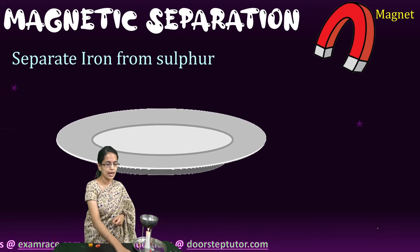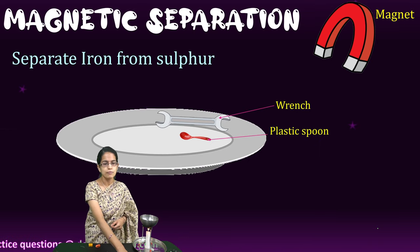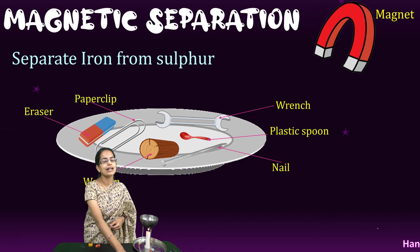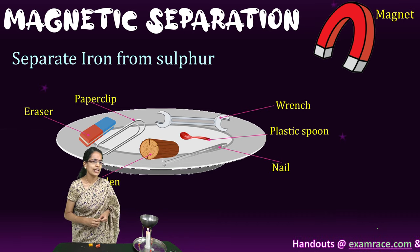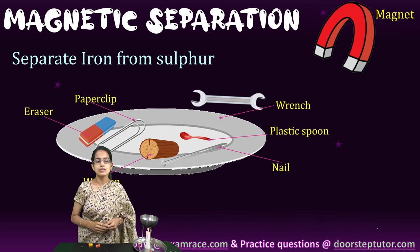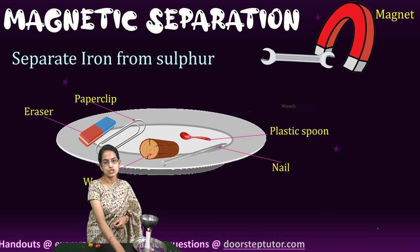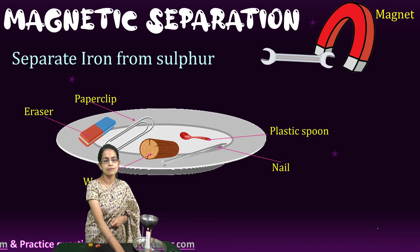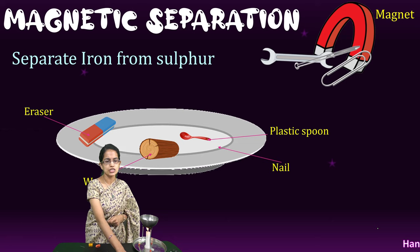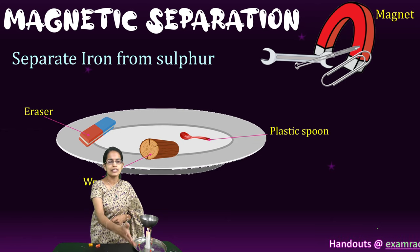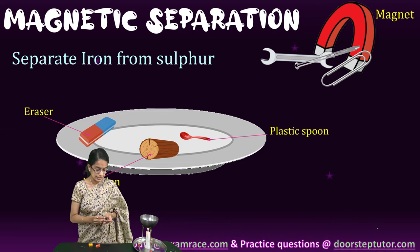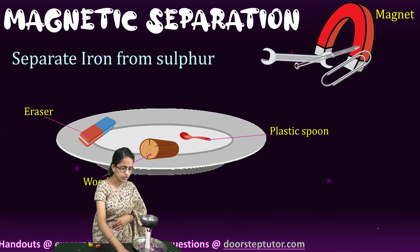Here's another demonstration. We have a magnet and several items: a wrench, a plastic spoon, a nail, a paper clip, a wooden block, and an eraser. The wrench moves and is attracted to the magnet. The paper clip and the nail are also attracted. What remains behind? The eraser, the wooden piece, and the plastic spoon — these are non-magnetic in nature. This demonstrates how magnetic separation works.